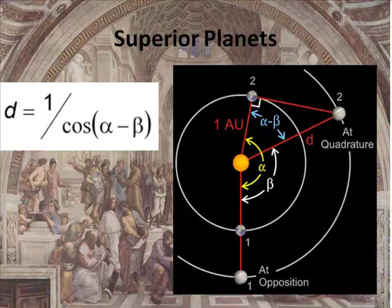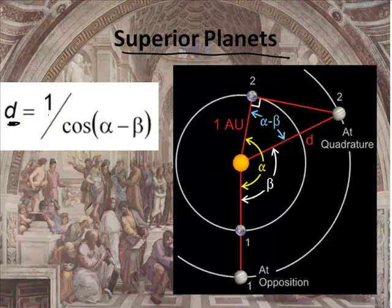Copernicus was also able to look at the superior planets. Those are the planets that are beyond the Earth's orbit. That would be Jupiter, Mars, Neptune, etc. And the equation gets kind of, well, a little bit uglier. It's not horrid, though. D, the distance from the Sun to the other planet, is 1 divided by the cosine. Now, what's a cosine? It's a button on your calculator. Times alpha minus beta.